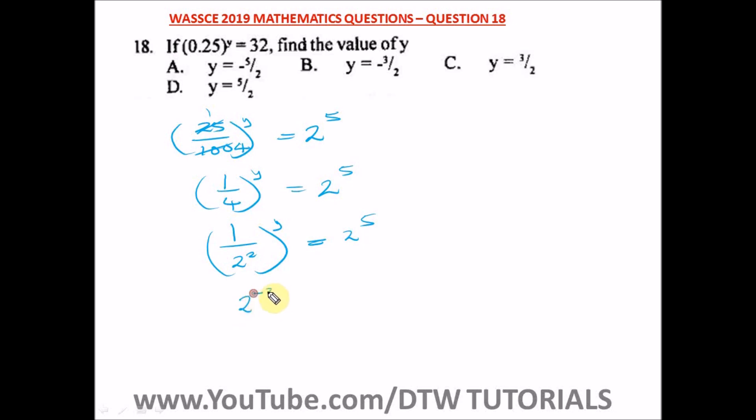We have 2 raised to power minus 2, all bracket y, is equal to 2 raised to power 5. Let us open up this bracket—this y will multiply this power.